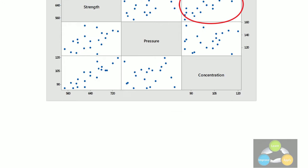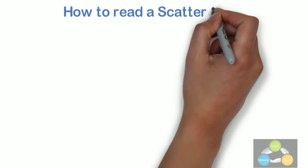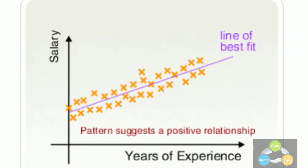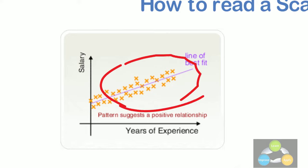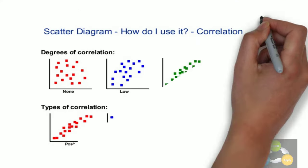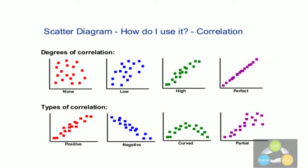Now we have seen what is the scatter plot. Now how to read the scatter plot? If the variables are correlated, the points will fall along a line or curve. The better the correlation, the tighter the points will hug the line. As we can see in the diagram, degrees of correlation varies from no correlation to perfect correlation, identified by distribution of points along the line.